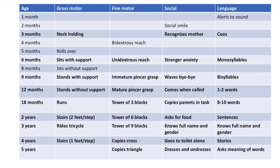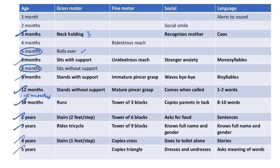Pediatric developmental milestones — gross motor: neck holding at 3 months, rolling over at 5 months, sits with support at 6 months, sits without support at 8 months, stands with support at 9 months, stands without support at 12 months, walks at 15 months.